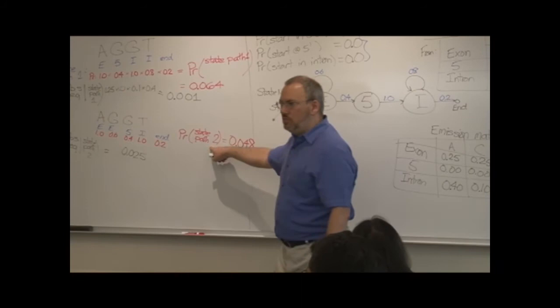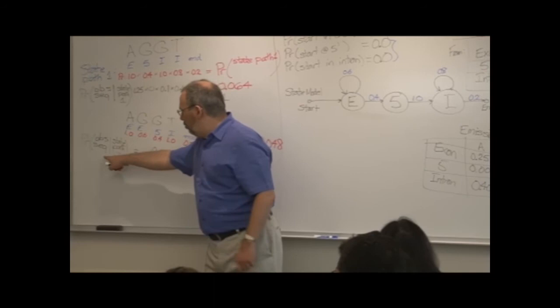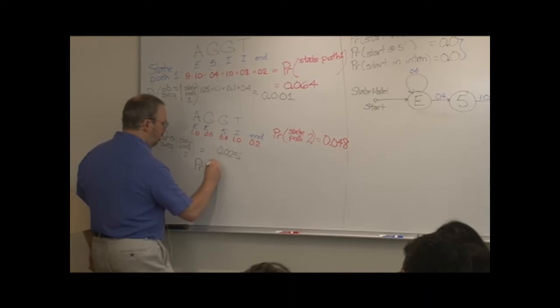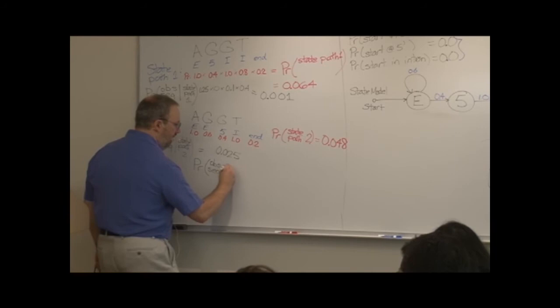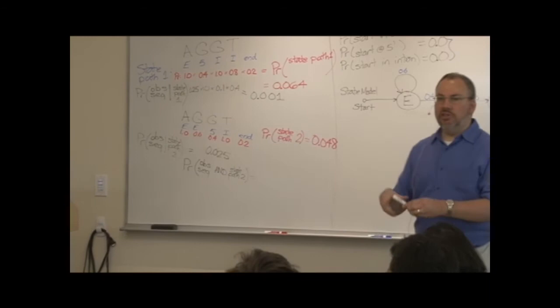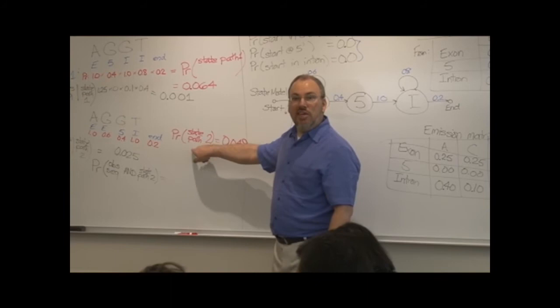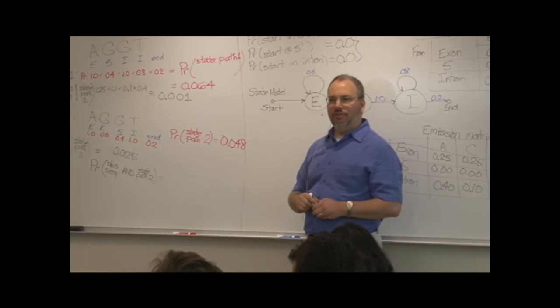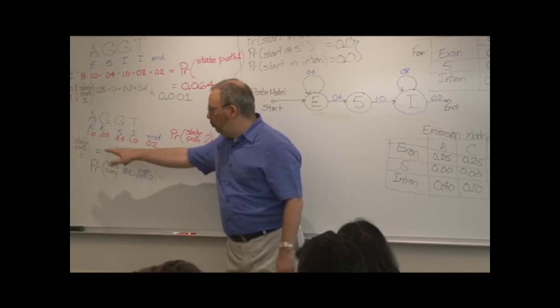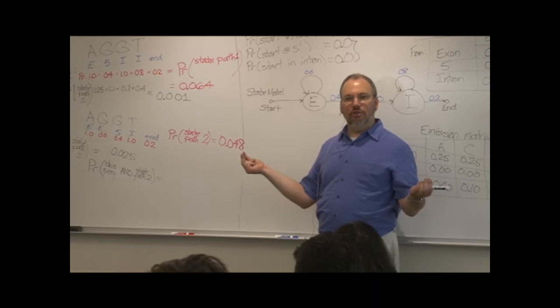So now, I know the probability of following state path two. And if I followed state path two, I can generate the probability of the observed sequence. So now, let me combine those two probabilities to get the probability of the observed sequence and state path two. Theoretically, this might make more sense if you think about it in the other order. What's the probability that first you follow state path two and then, given that you did that, that you generated the observed sequence?